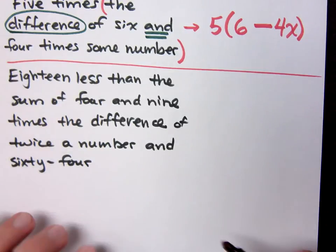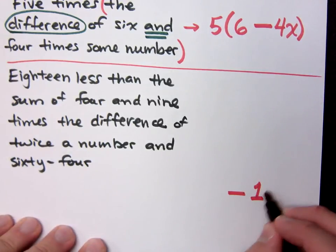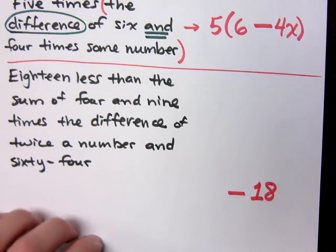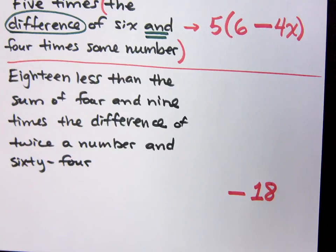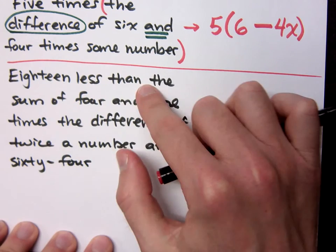So I know that I'm going to have, at the end, minus 18. I'm taking that away from something, right? I don't start off with minus 18. I'm taking it away from whatever's there. What am I taking it away from? I'm taking 18 away from what?